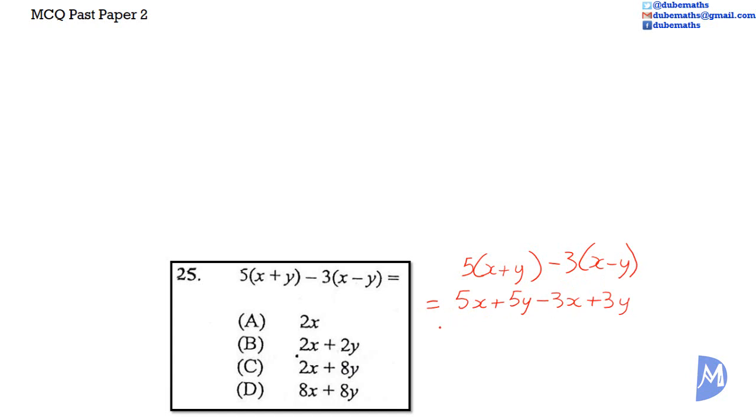5x minus 3x is equal to 2x. 5y plus 3y is equal to 8y, positive 8y. The answer is C.